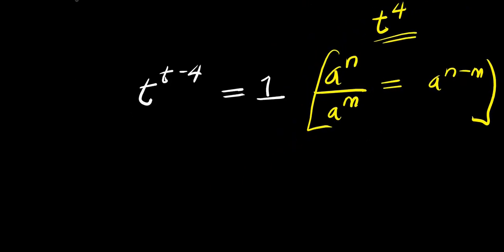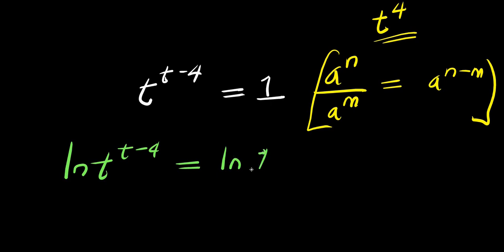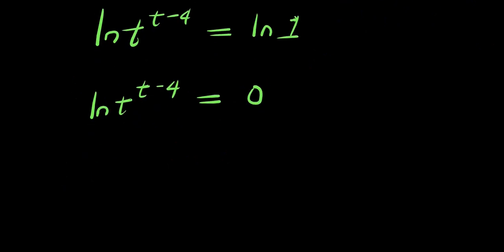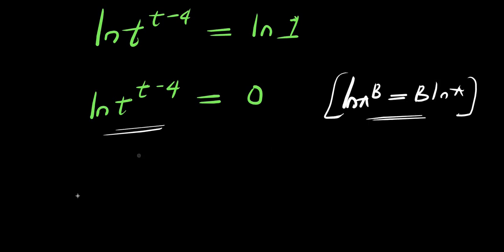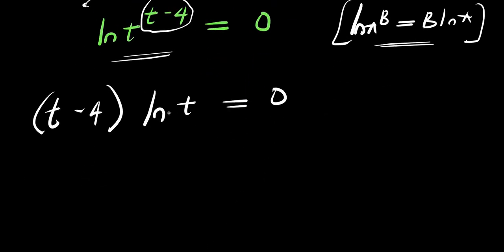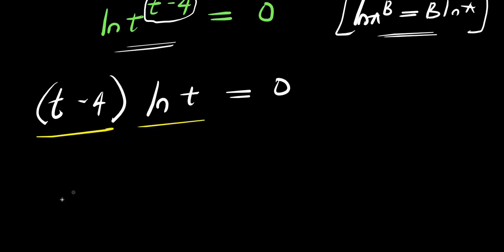At this point, we apply natural log. We have ln of t to the power of (t minus 4) equals ln of 1, which is 0. Using the rule ln of a to the power of b equals b times ln(a), we get (t minus 4) times ln(t) equals 0. Equating each factor to 0: t minus 4 equals 0, or ln(t) equals 0.